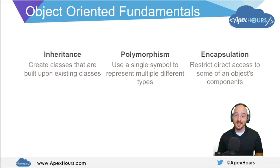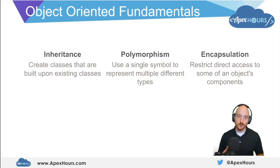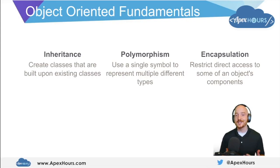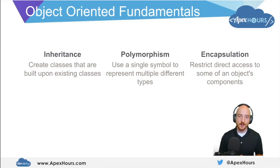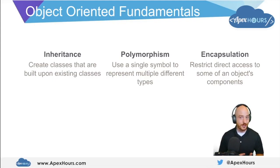These are the differentiating factors that separate object oriented programming from functional programming or other programming paradigms. The three we care about are: Inheritance, which allows us to create a class built upon the functionality of an existing class, greatly reducing our overall number of lines of code. Polymorphism, which means many forms — we can use a single symbol or method name across multiple separate types. And encapsulation, which allows us to restrict access to some of the data we hold within our objects at runtime. All three together enable what we call object oriented programming, which is a powerful paradigm.